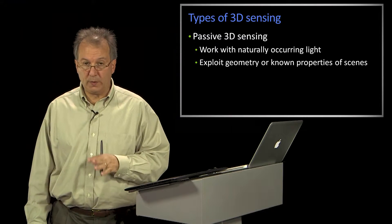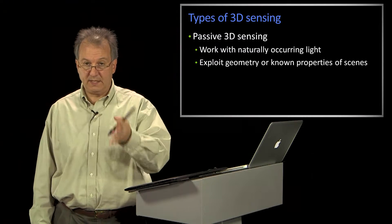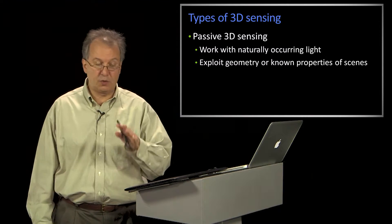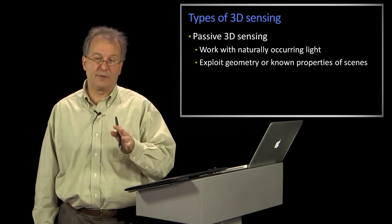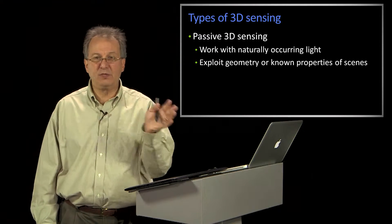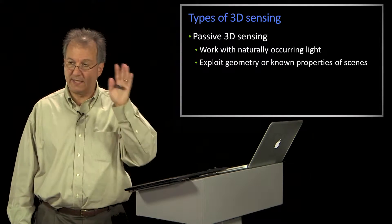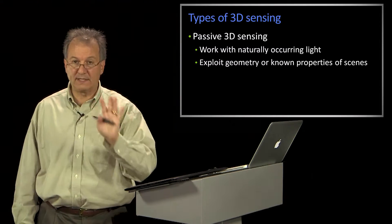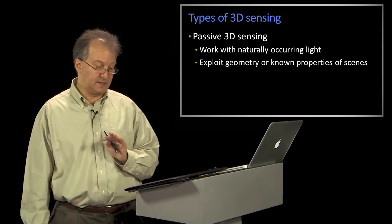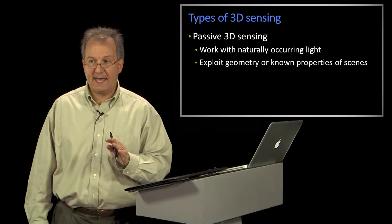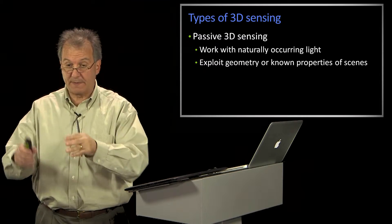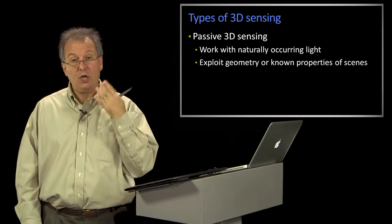There are a couple of ways of doing 3D sensing, some of which we've already seen. So passive 3D sensing — what do we mean by that? That means you don't use any active illumination. You take the world as it's given to you and you somehow sense that, and maybe you exploit some known geometry of the properties or something about the scene.